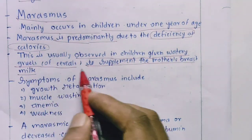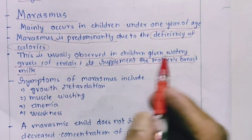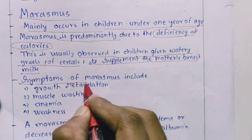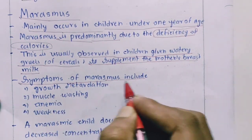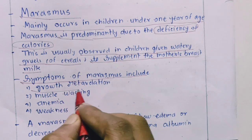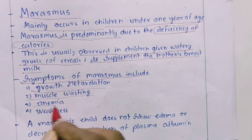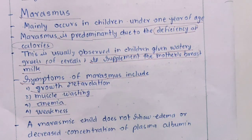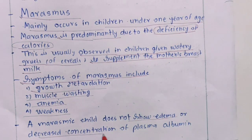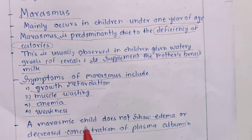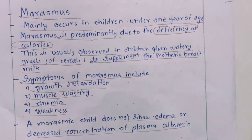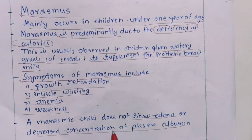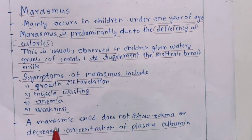Symptoms of Marasmus include growth retardation, muscle wasting, anemia, and weakness. Importantly, a Marasmus child does not show edema or a decrease in plasma albumin concentration — this is a very important distinguishing feature. In Marasmus, edema is absent and plasma albumin concentration remains normal.